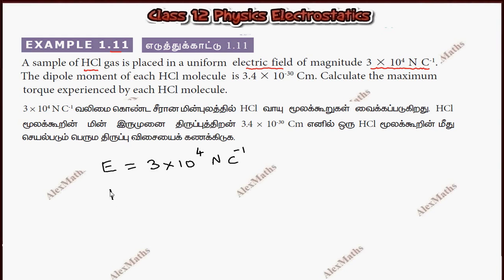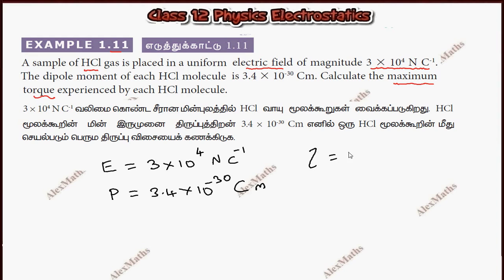The question asks us to calculate the maximum torque. The torque formula is: tau equals P times E times sin theta.